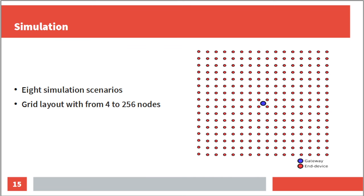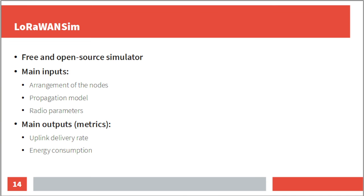The main inputs of the simulator are the arrangement of nodes, the propagation model, and a set of parameters that determine the behavior of the protocol stack layers. As outputs, the simulator returns the uplink delivery rate and the energy consumption metrics.